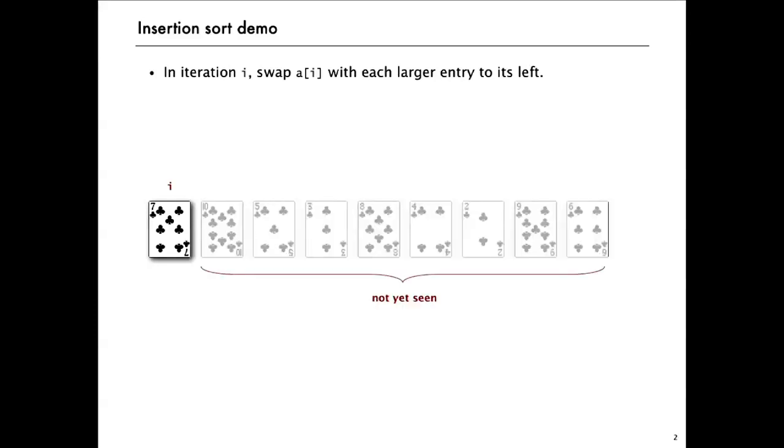So now we start by initializing i at the first card. And we take the idea that everything from i to its left is going to be sorted, and everything from the right we're not going to look at at all. So everything to the left of i is in ascending order. Everything to the right we haven't seen at all yet.